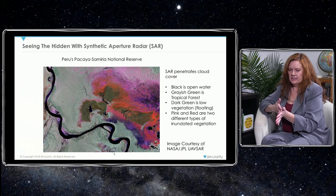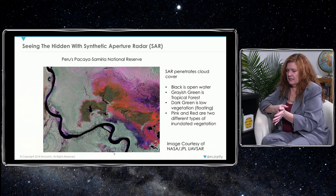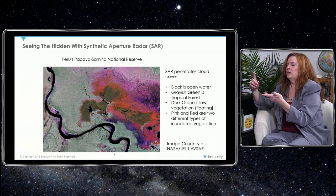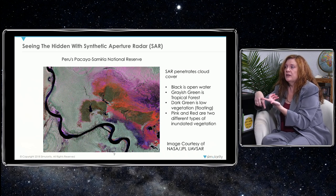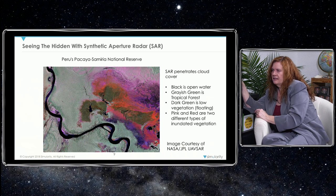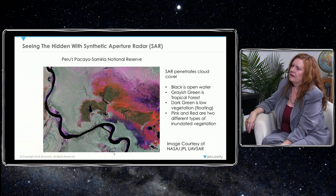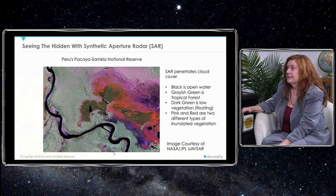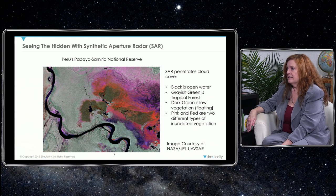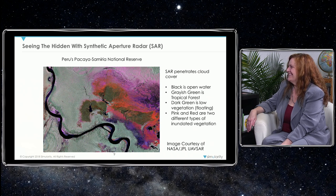Just like there are indices in multi-spectral imagery, people who study SAR create indices to tell you: if you're seeing this reflectance pattern, it means it's inundated vegetation. The radar can go at night or during the day, and depending on the reflectance pattern you get back you can make predictions. There's a lot of technicality to unpack on the technical side.